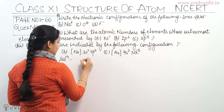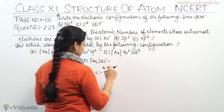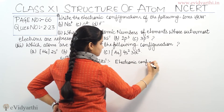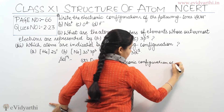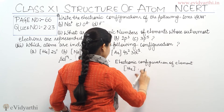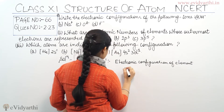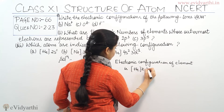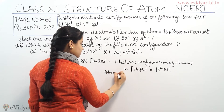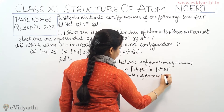Beginning with the first part of the third question. For A part: I will write the electronic configuration of the element. Electronic configuration of element represented as Helium 2s1 is equal to 1s2, 2s1. So the atomic number of the element is equal to 3.